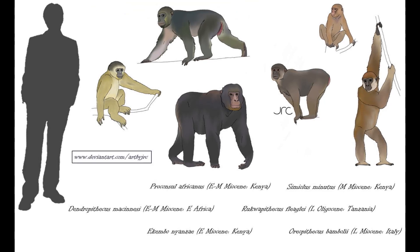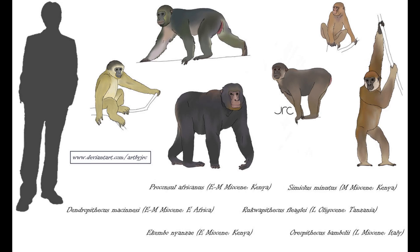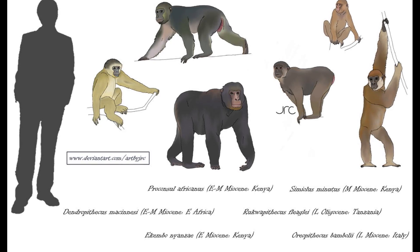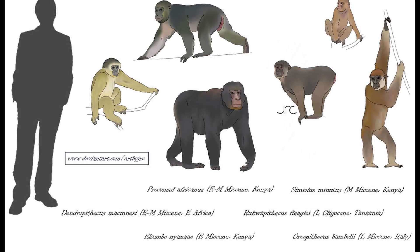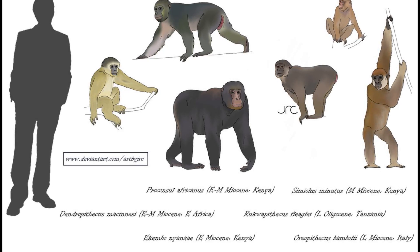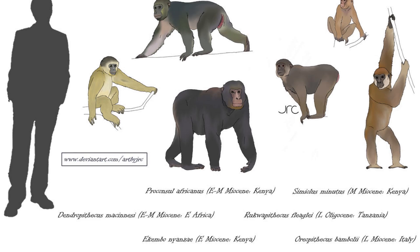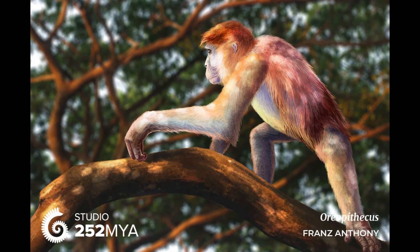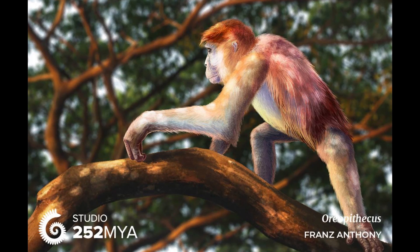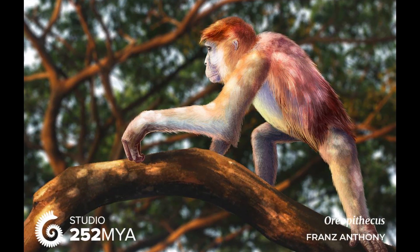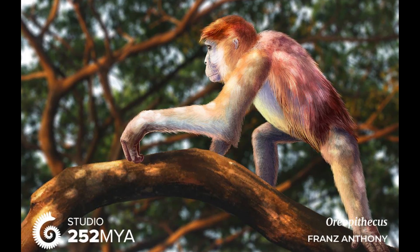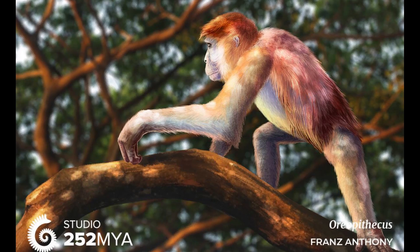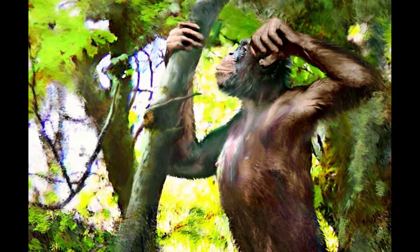Modern studies have placed the animal as a member of the basal ape family Dendropithecaidae, and in particular within the subfamily Nyanzapithecinae. These were the most basal of all apes, with Oreopithecus being the only genus to have lived outside Africa. It was also the latest surviving form, dying out 7 million years ago as its island home came into contact with the European mainland, with the introduction of new predators spelling doom for this specialised ape.